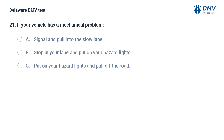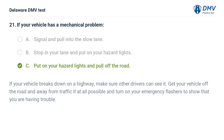If your vehicle has a mechanical problem: A. Signal and pull into the slow lane. B. Stop in your lane and put on your hazard lights. C. Put on your hazard lights and pull off the road. Answer: C. If your vehicle breaks down on a highway, make sure other drivers can see it. Get your vehicle off the road and away from traffic if at all possible, and turn on your emergency flashers to show that you are having trouble.